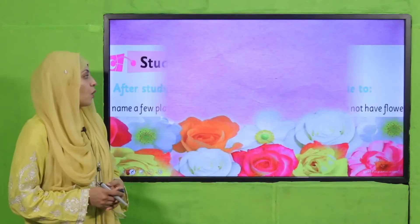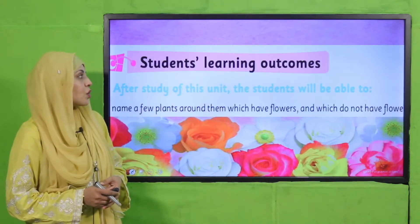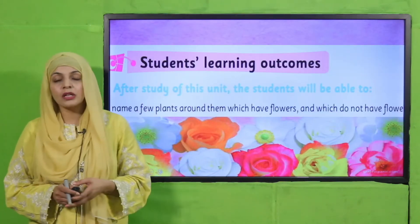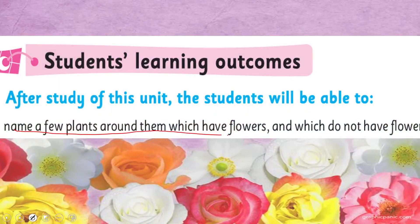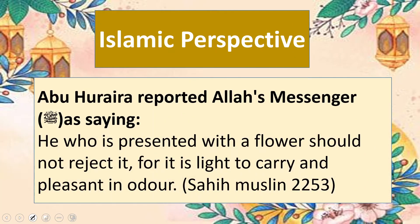In today's lecture, students will be able to name a few plants around them which have flowers and which do not have flowers. Aaj bache un paudon ke naam bata sakenge jinn par phool lagte hain aur jinn par phool nahi lagte.